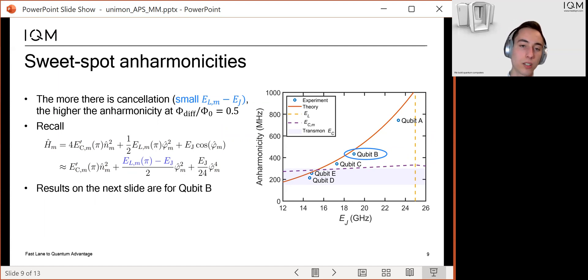Secondly, we can see that the anharmonicity increases as the Josephson energy approaches the inductive energy, and more and more of the second-order potential energy terms are cancelled. As a final remark, the anharmonicities of qubits A, B, and C are significantly higher than the conventional anharmonicity of transmon qubits.